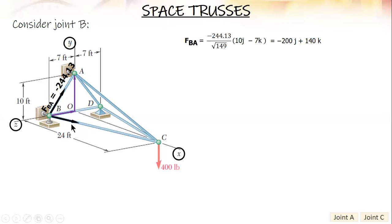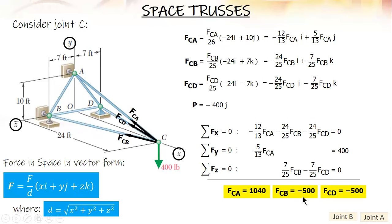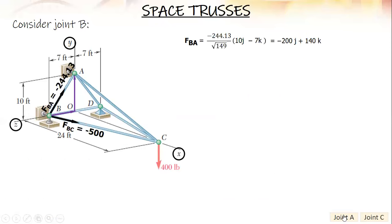Then for BC, negative 500. Check that CB is negative 500. The direction or sign of the components are opposite. CB, for BC that would be positive 24I minus 7K. Positive 24I minus 7K. Then simplify.